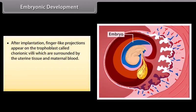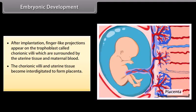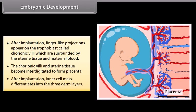During embryonic development, the chorionic villi and uterine tissue become interdigitated to form the placenta. After implantation, the inner cell mass differentiates into three germ layers.